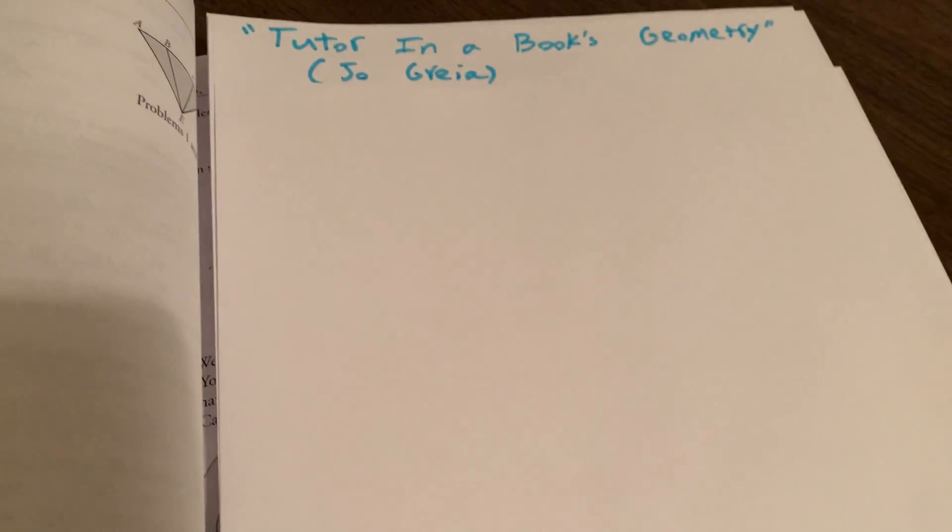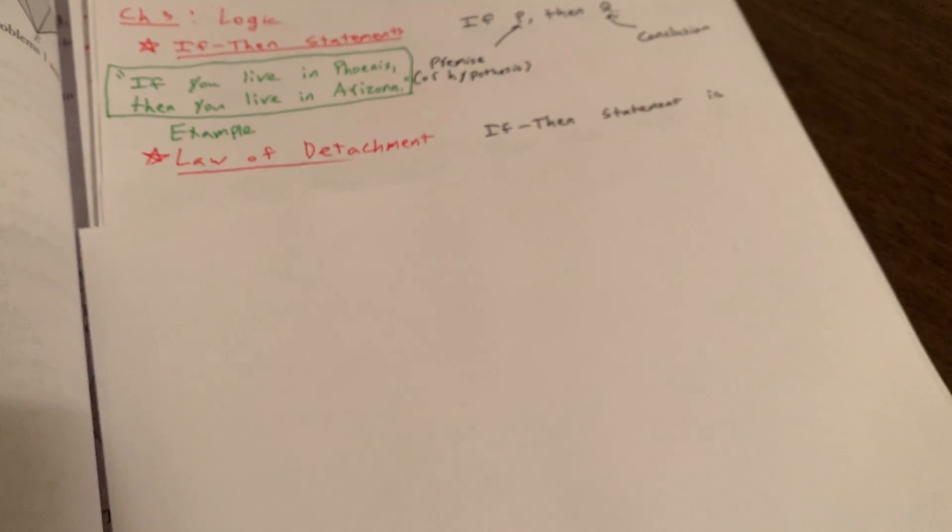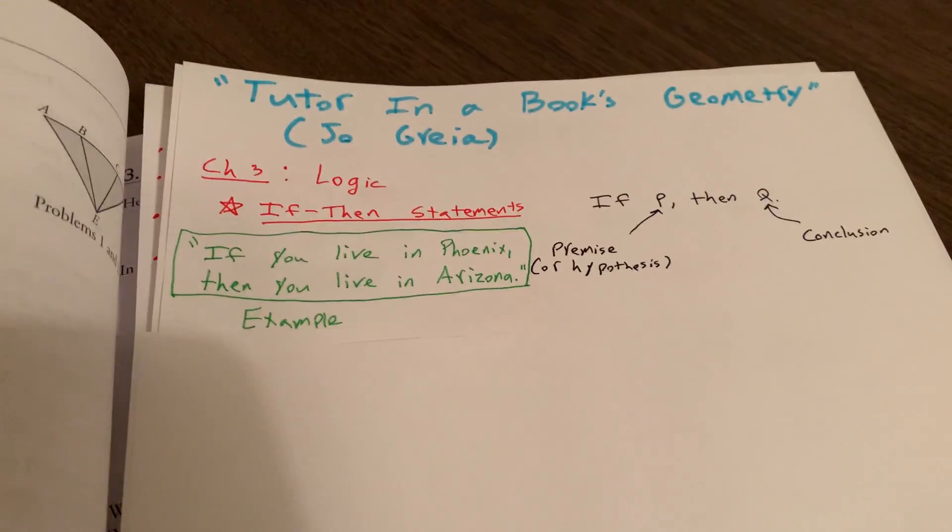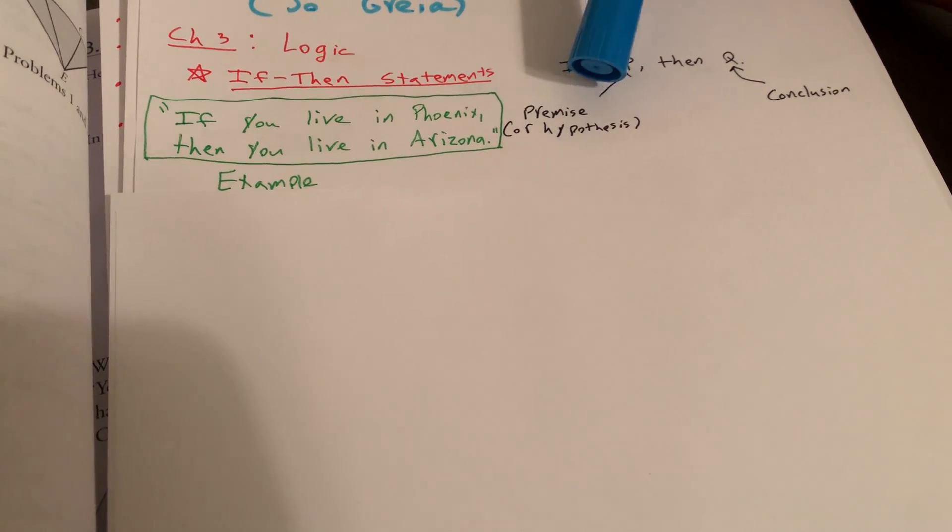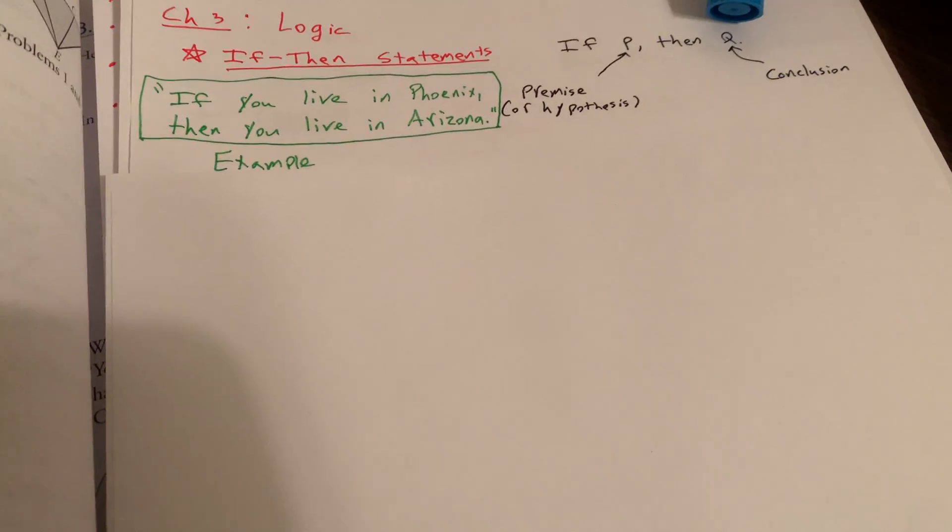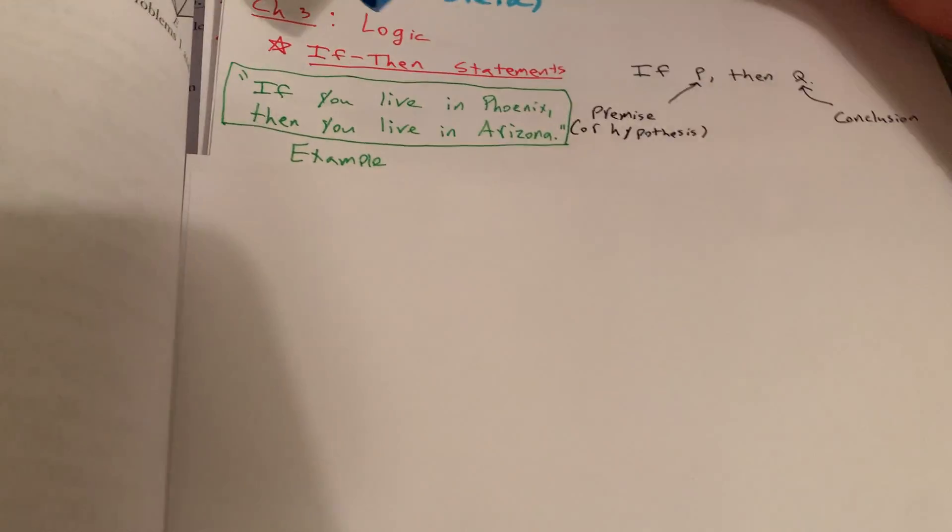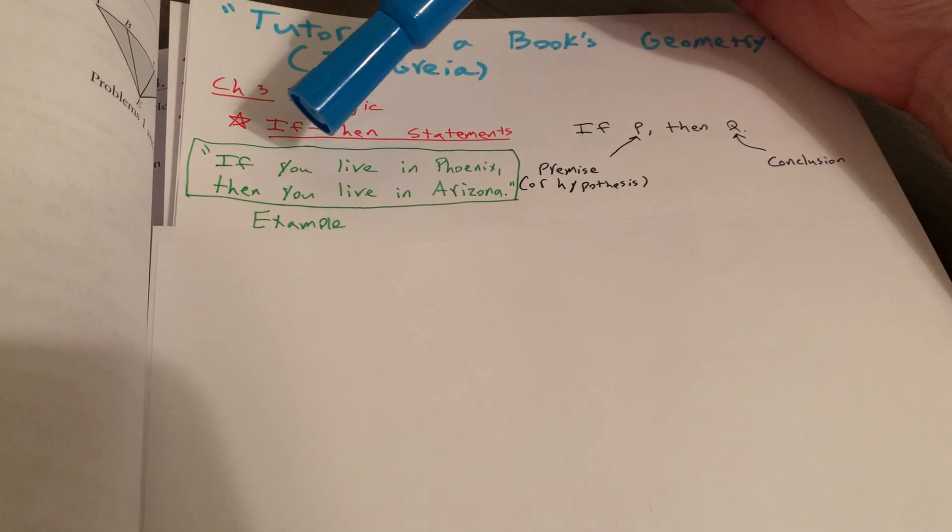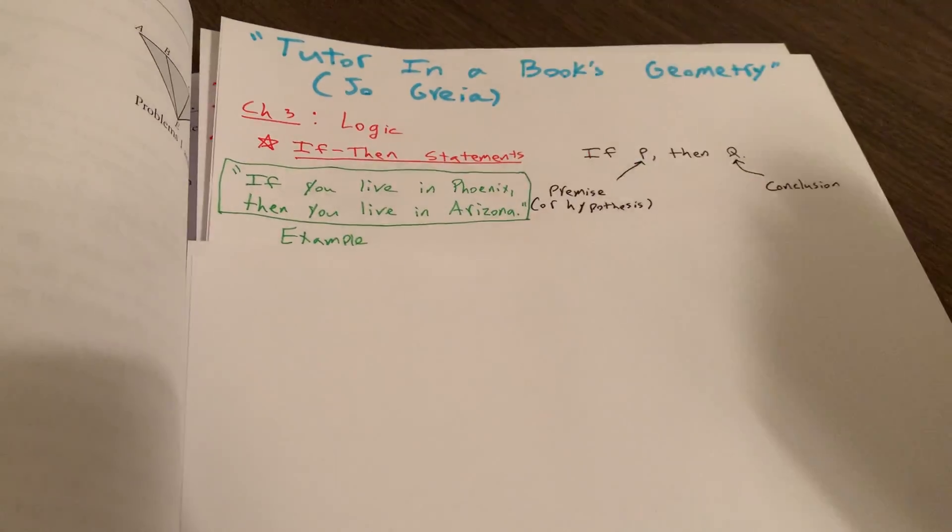We'll think about Tutor in a Book's Geometry. The first thing we'll get into is the if-then statement. So here we have if P, then Q. We call P, oftentimes in high school geometry, the premise or the hypothesis. I prefer the term antecedent. And we call Q the conclusion. I prefer the word consequent. But in any case, an example might be if you live in Phoenix, then you live in Arizona. So P is you live in Phoenix. Q is you live in Arizona.